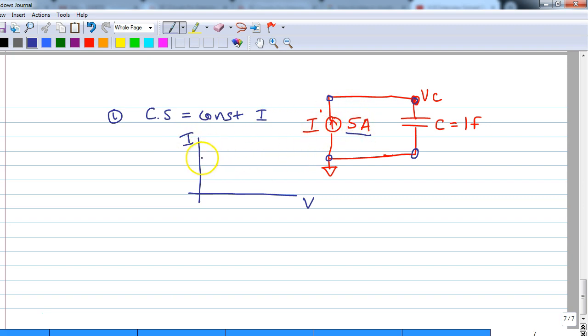Now this 5 amps current is going to be a constant value irrespective of any voltage. You see that voltage can be anything but current is continuing to be 5 amps. So this is the graphical meaning of what a current source means.